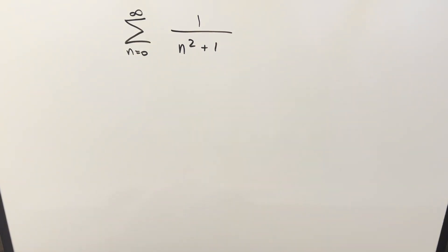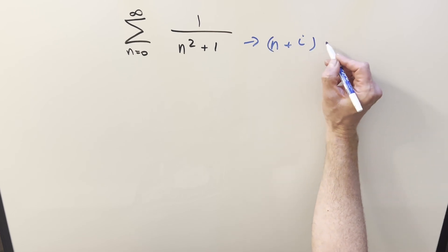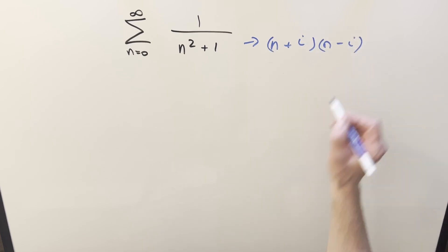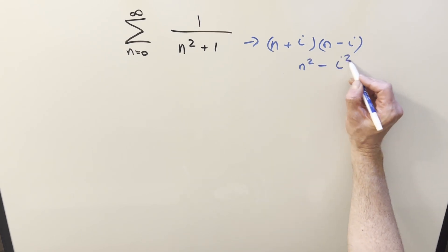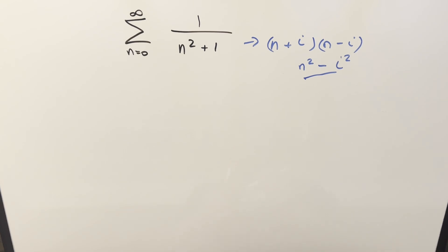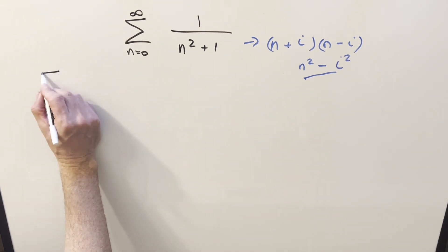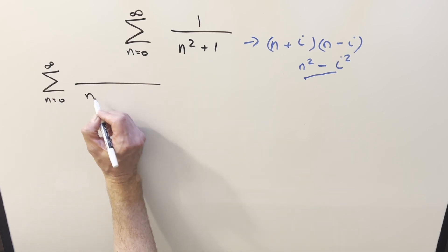I know a few different ways, but I've got something specific in mind. What I want to do is first factor this. Even though it looks like a problem, we can still factor n squared plus 1 as (n plus i) times (n minus i). When you distribute that out, you've got n squared minus i squared, but i squared is minus 1, so this is the same as the original denominator. So I'll rewrite it with the denominator factored this way.